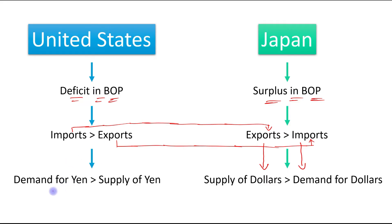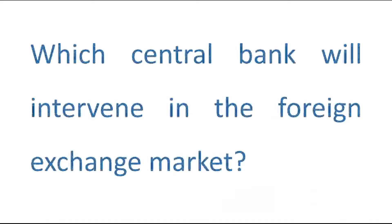As we can see, the demand for yen is greater than the supply of yen, and the supply of dollars is greater than the demand for dollars — so there is a disequilibrium. We need to achieve the equilibrium exchange rate at a fixed price. The question is: which central bank will intervene in the foreign exchange market to maintain a credible fixed exchange rate?